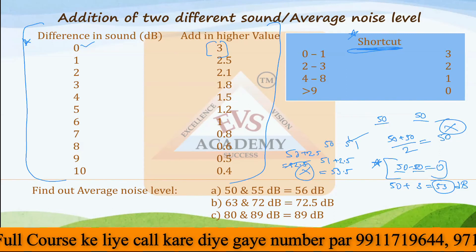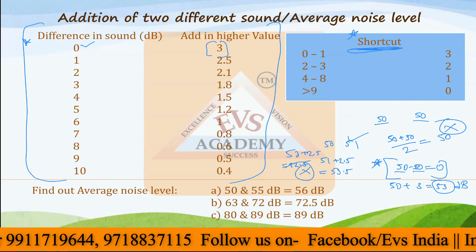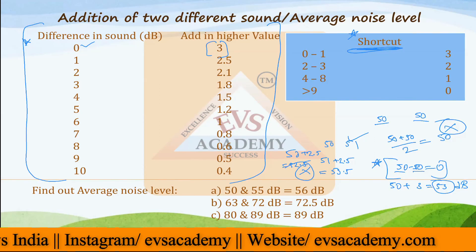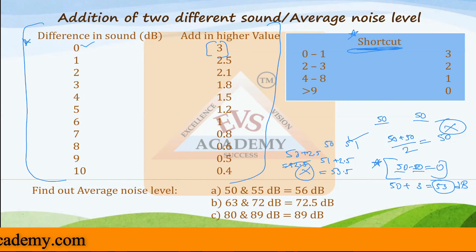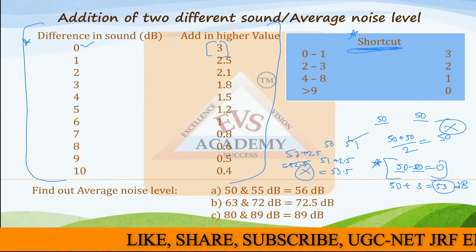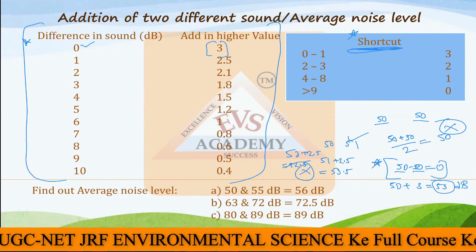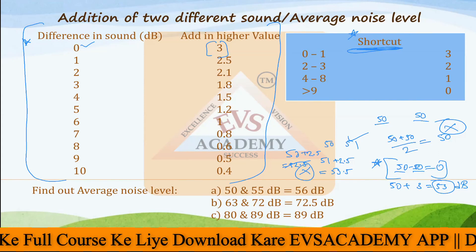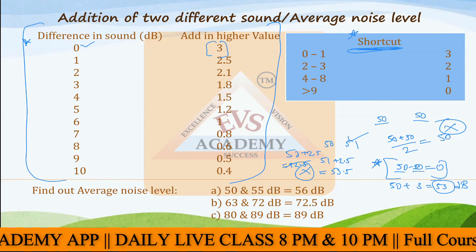The table gives values up to a difference of 10. If the difference between two noise levels is, say, 50 and 60 decibels, you add 0.4 to the higher value, giving 60.4 decibels. If the difference between the two noise levels is more than 10 — whether 11, 12, 15, 20, or even 100 — the answer is simply the higher noise level. Nothing is added or removed; the smaller noise level contributes no appreciable value.